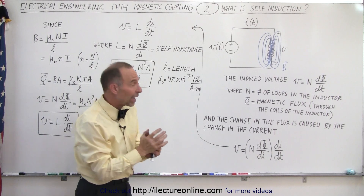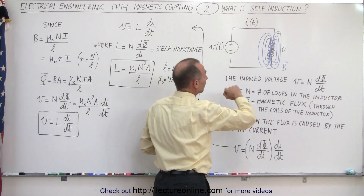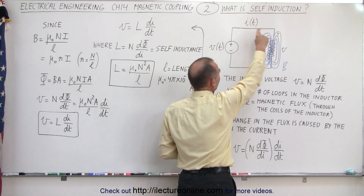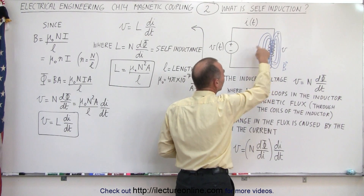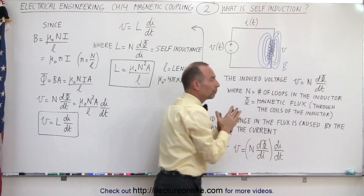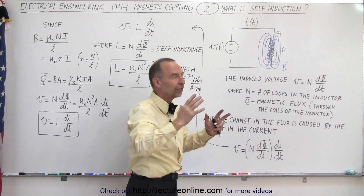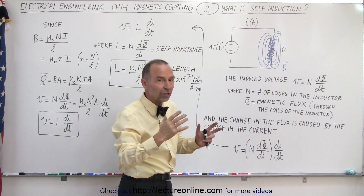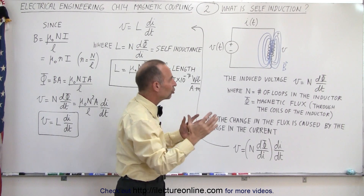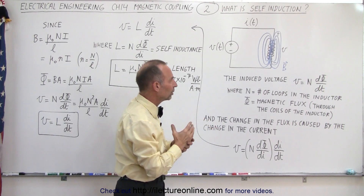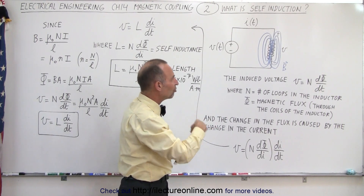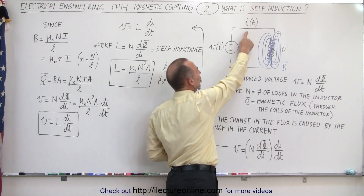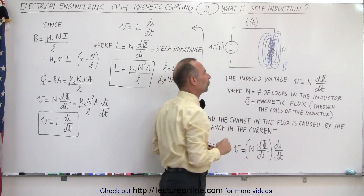Let's say we have an inductor in the circuit. As the current goes through the inductor, we'll build up a magnetic field. And as the current is changing, the magnetic field will change as well. There will be a changing magnetic field because of the changing current.